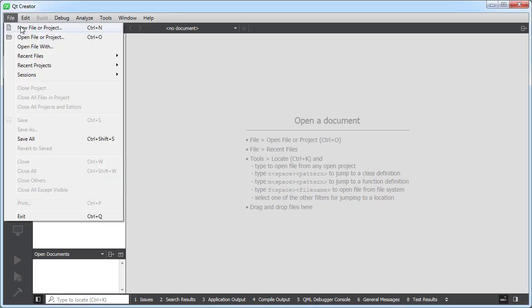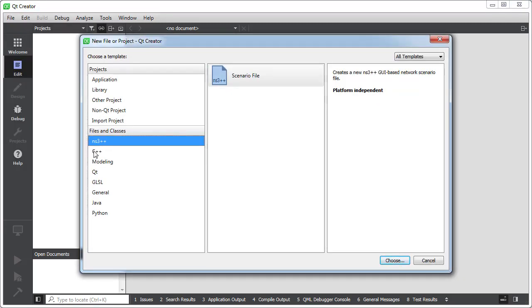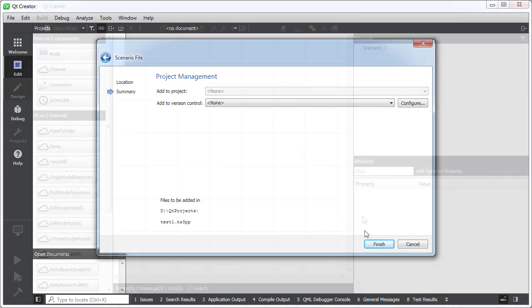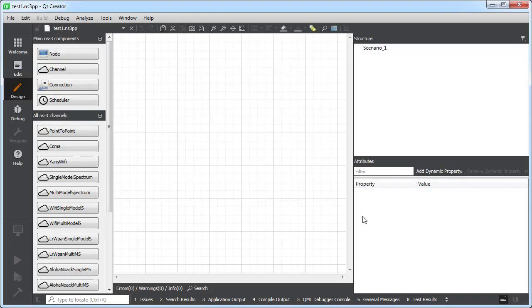Here is Qt Creator running. I'm going to go to File, a new file or project, and you can see I can select NS3++ scenario file. I'll give it a name. I'm greeted with three areas in the plugin. There is the prototype area to my left. In the middle, I have my work area, and to my right is the attributes area.